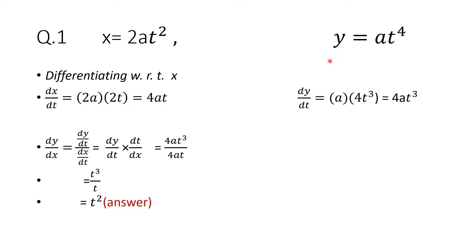Now we will do the derivative of the y function. dy by dt is equal to a as it is. The derivative of t⁴ will be 4 multiplied by t³. So this comes out to be 4at³.